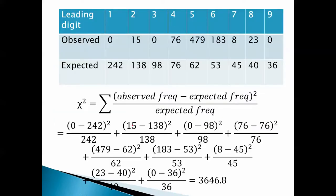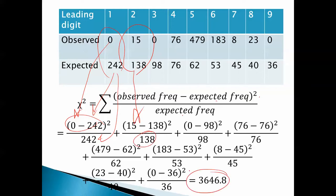So here's our chart. Leading digits, observed, expected. Now, we calculate chi-square. Observed minus expected squared over expected. So, this first one, for example, is 0 minus 242, squared, all over 242. Same way: 15 minus 138 squared over 138, etc. And we just add all of these up, and we end up with 3646.8.